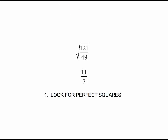So that is our first rule: number one, look for perfect squares. Those are the easiest kind of square root fraction problems to deal with when the top and the bottom are both perfect squares, but sometimes that's not the case.